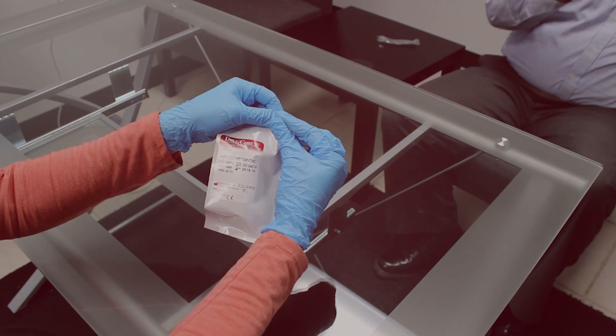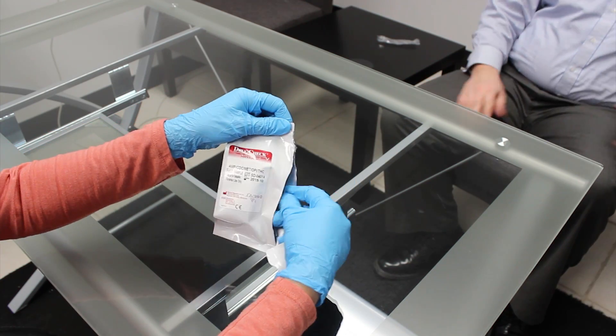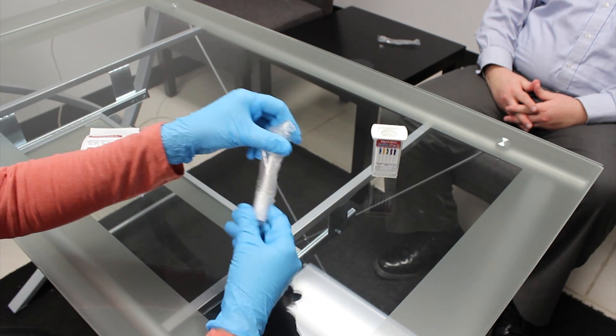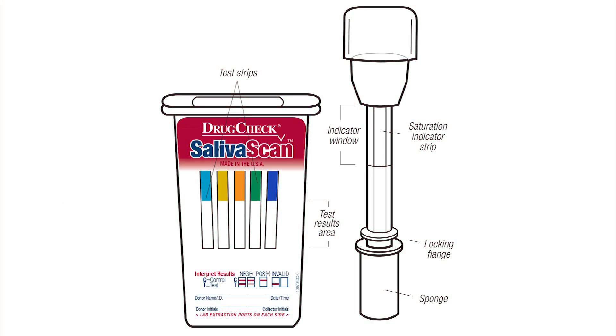Tear open the foil pouch and remove the test device and collection swab. Do not use the collection swab if the indicator dye is visible in the saturation indicator window prior to use.